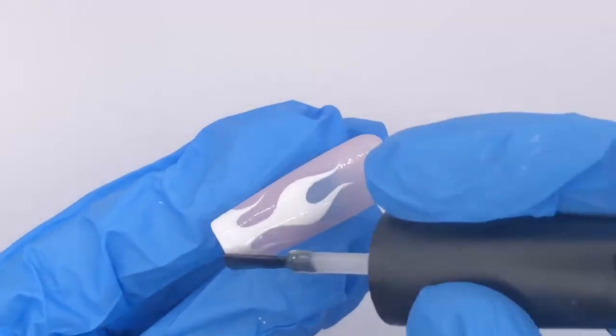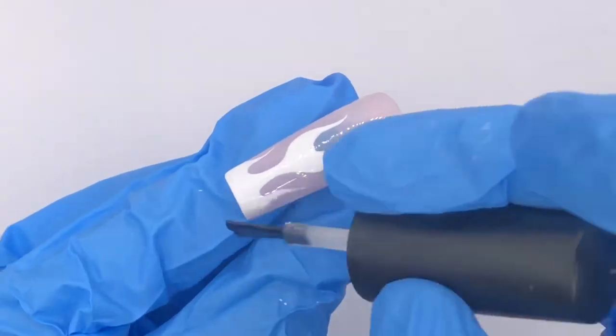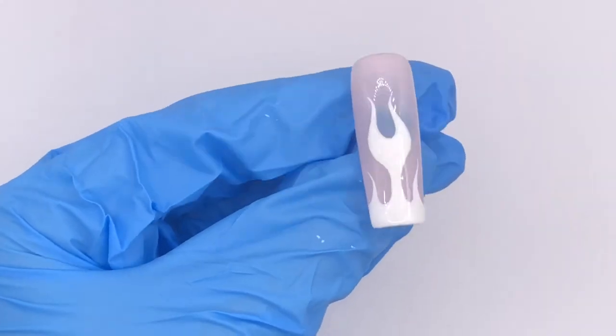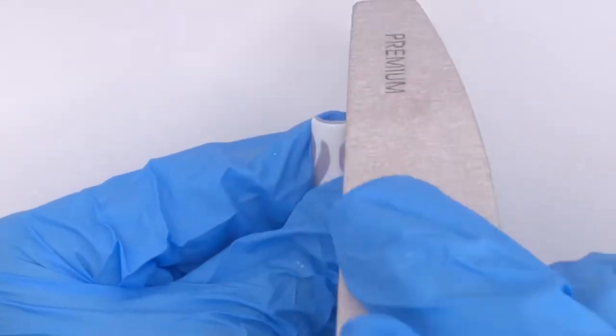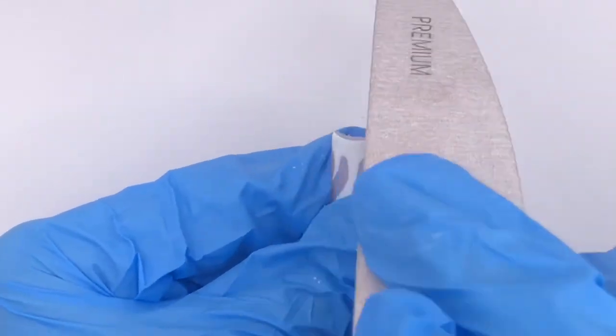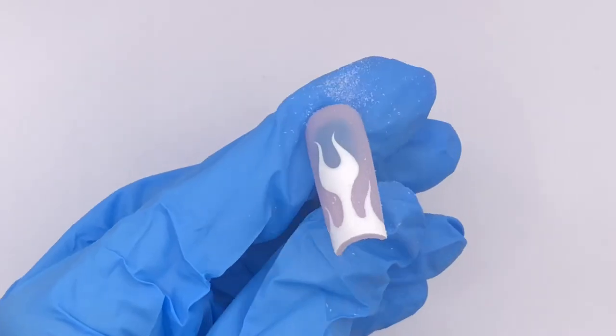Once you've cured it in the lamp for 60 seconds, I go back in with a nail file to straighten out the tips. Then I'm going to go in with a lint-free wipe and alcohol to get all of the dust off.